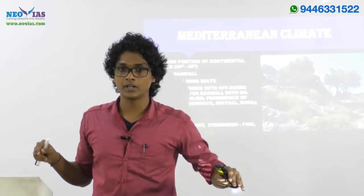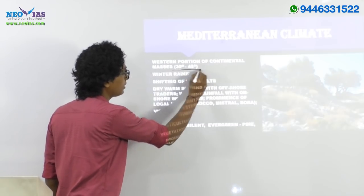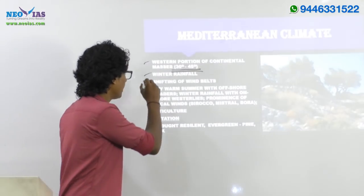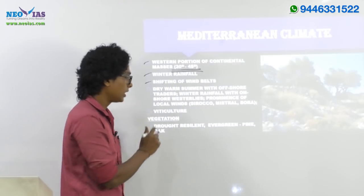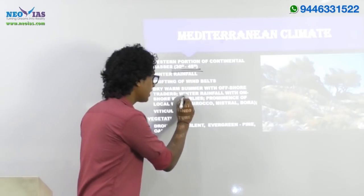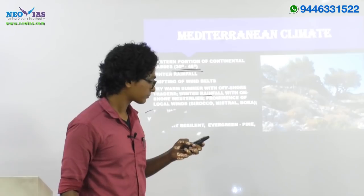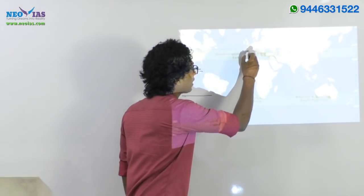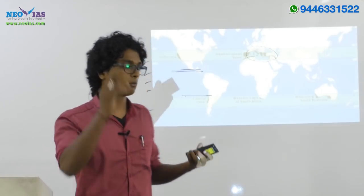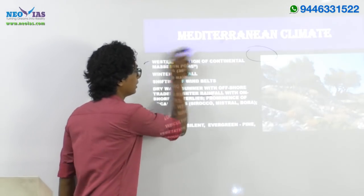Wherever you see winter rainfall or wet winter, it is related with the Mediterranean climatic type. These regions are seen over the western portion of the continental masses between 30 to 45 degree latitude, having winter rainfall, and during summer time they have dry and warm conditions. One season is dry warm summer with offshore trade wind and during winter we have winter rainfall due to the onshore westerlies. The regions surrounding the Mediterranean are also used for viticulture — growing grapes — and they are famous for wine production.